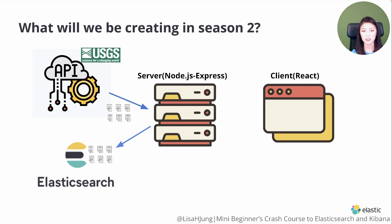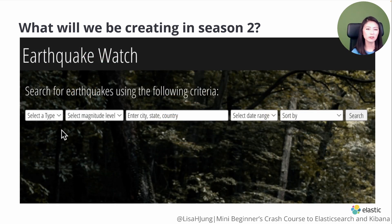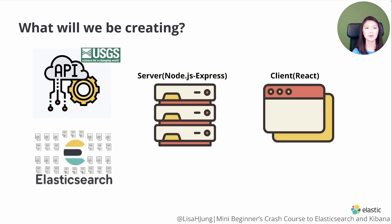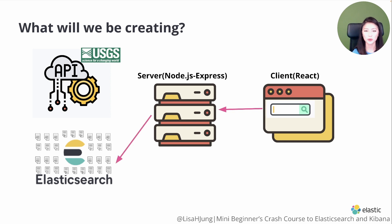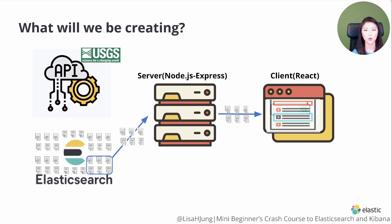After the data is ingested into Elasticsearch, we'll set up our client for search. Using our client, the user could search for earthquakes by selecting criteria. We'll set up the client to capture the user's input and send it to the server. The server will pass the user input into an Elasticsearch request. Upon receiving the request, Elasticsearch will retrieve relevant results and send them to the server, which will forward the results to the client to display for the user.